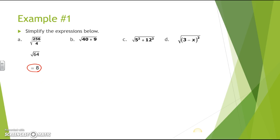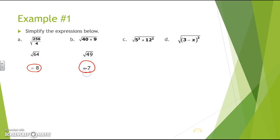The next one, we have the square root of 40 plus 9. You first add those together: 40 plus 9 is 49. So you have the square root of 49, which gives you an answer of 7. Final answer.